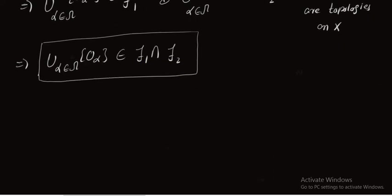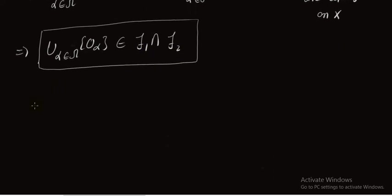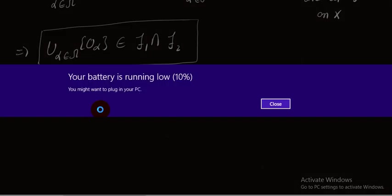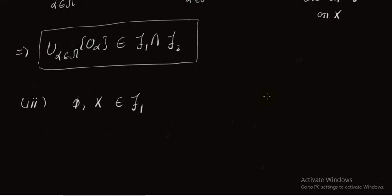Now we move to the last condition for the topology, in which we prove that φ and X belong to τ1 ∩ τ2. Since φ and X belong to τ1, because τ1 is a topology on X, we have φ and X belong to τ1.